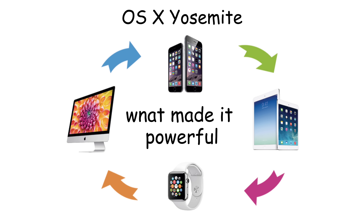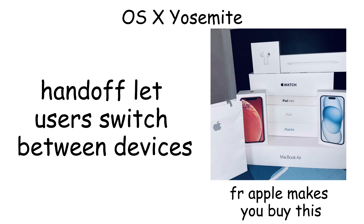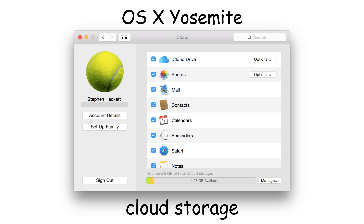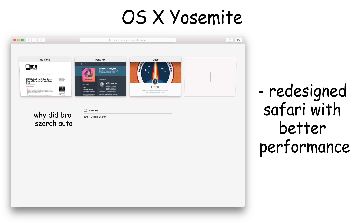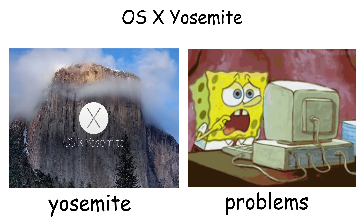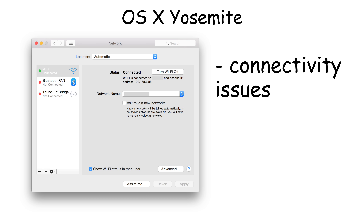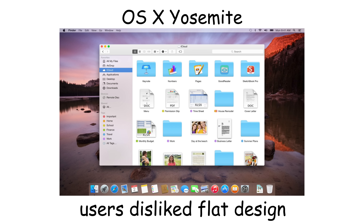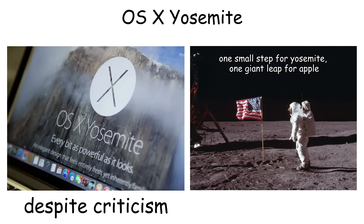What made Yosemite powerful was its ecosystem integration. Handoff let users seamlessly switch between Mac, iPhone, and iPad while working. Yosemite improved Spotlight Search and introduced iCloud Drive for cloud storage. It also redesigned Safari with better performance. However, many users experienced Wi-Fi connectivity issues with random disconnections, and performance complaints were common, especially on older hardware. Some users also disliked the flat design. But despite criticisms, Yosemite was a major step toward ecosystem unification.